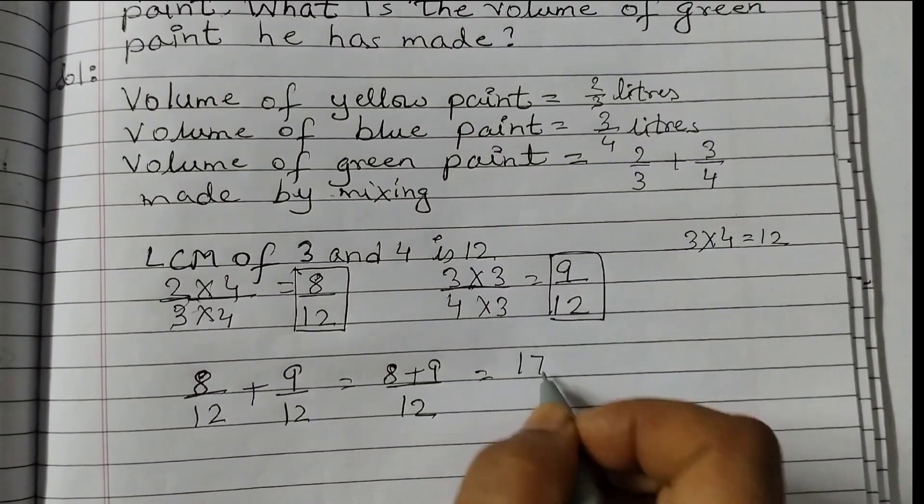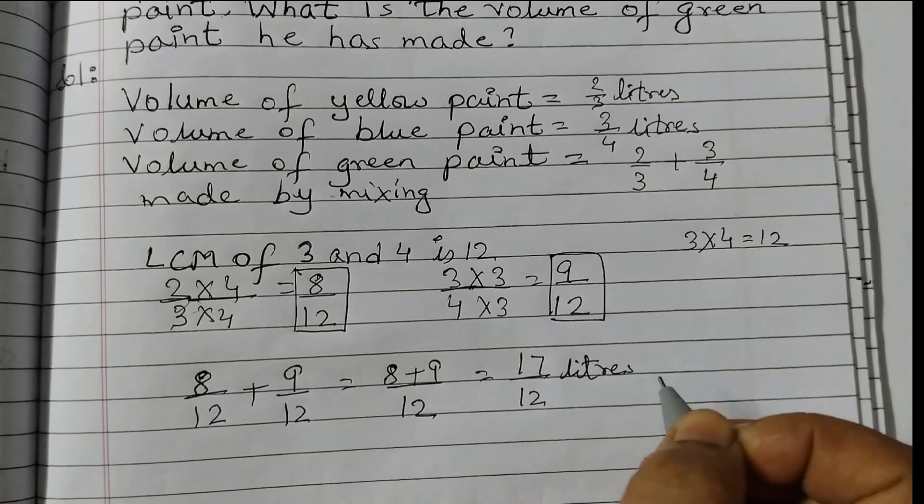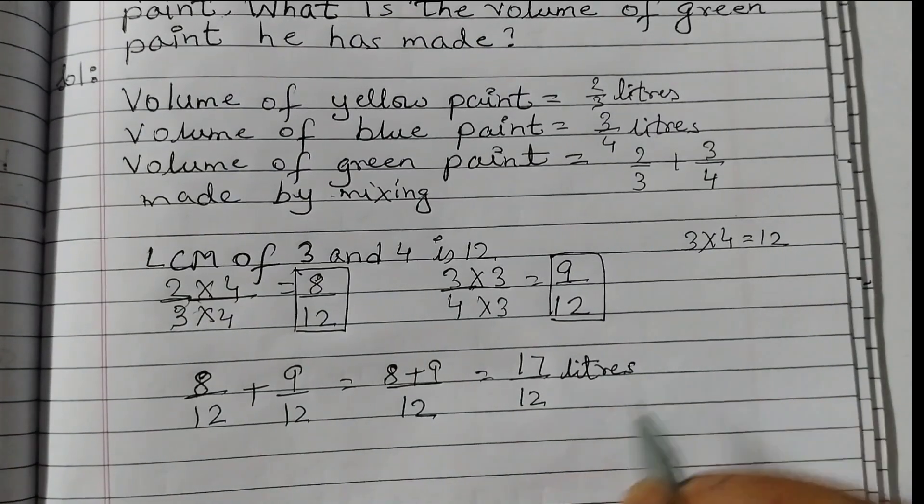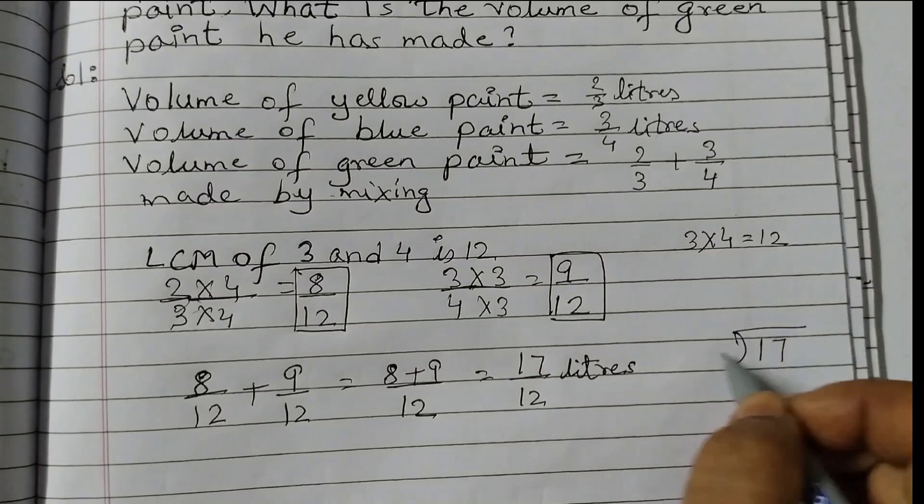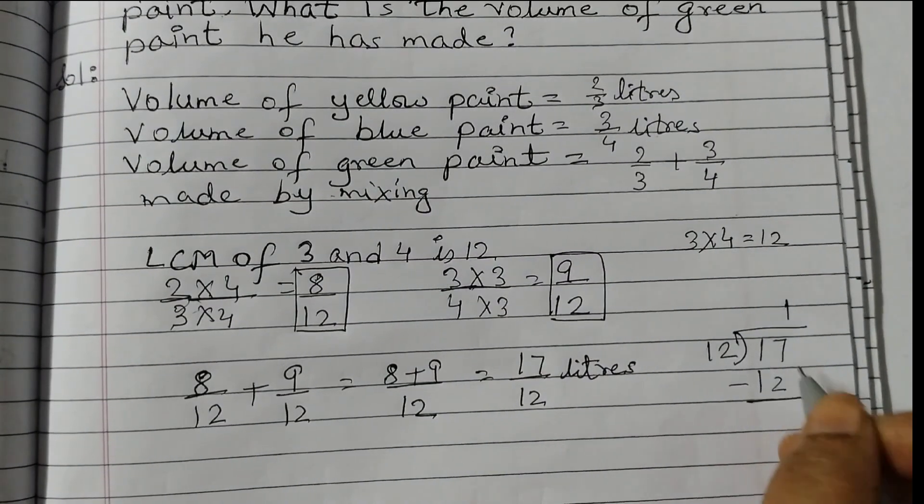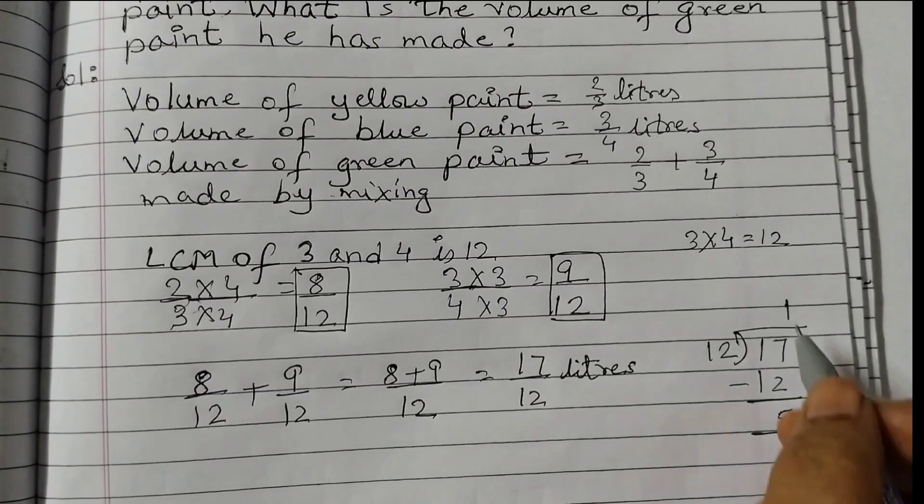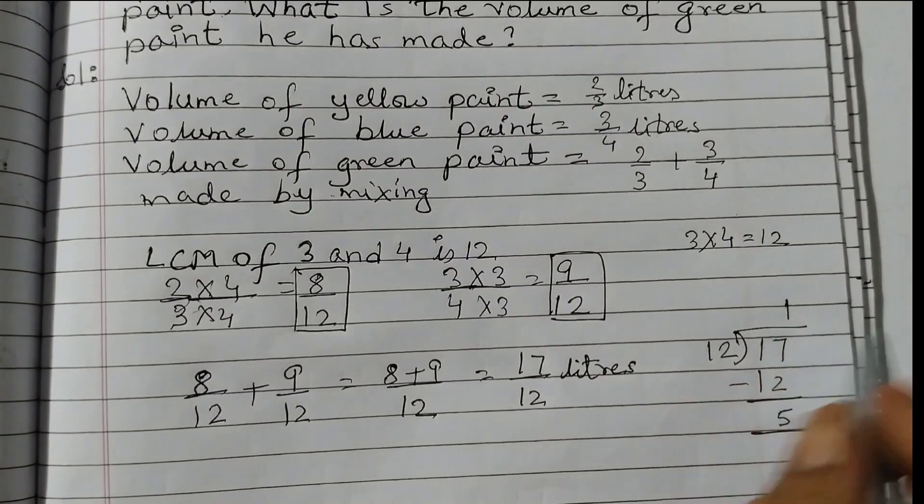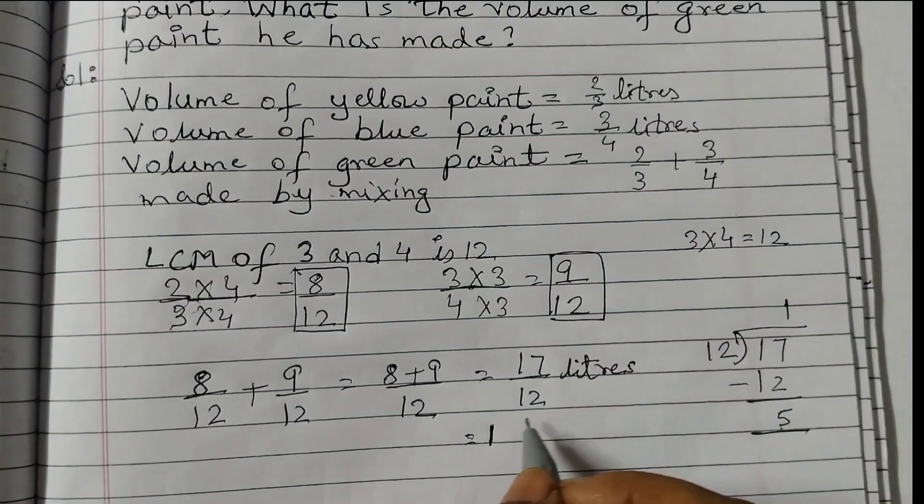We can convert this to a mixed number. 17 ÷ 12: twelve ones are 12, and 17 - 12 = 5. So we write 1 whole and 5/12, which is 1 5/12 liters.